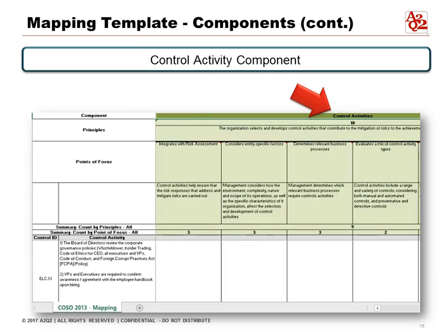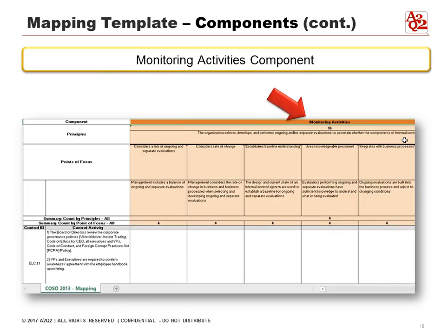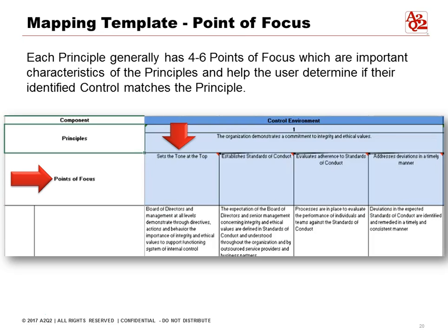Continuing on with control activities — what we did was we took the framework, we took the principles and outlined them. We then typed in the points of focus and typed in the details to the points of focus. For the information and communication component we've done the same thing, and likewise for monitoring activities. So all 17 principles are mapped and they map to a particular component from 1 to 17.